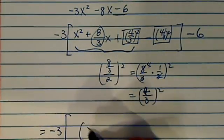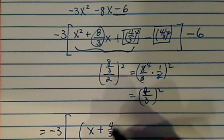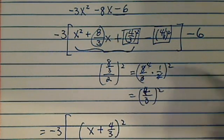And that happens to be a complete square. It's actually x plus 4 over 3, the whole thing squared.